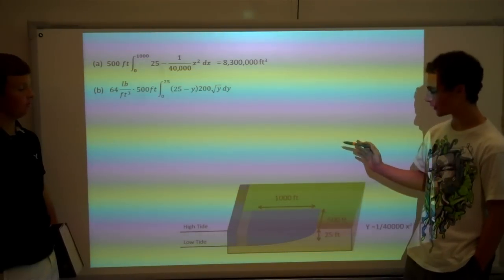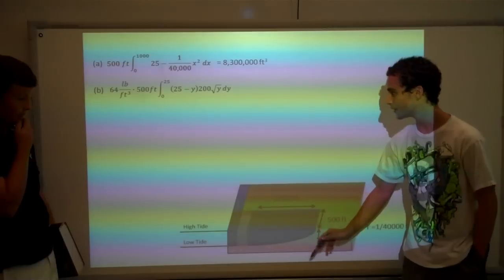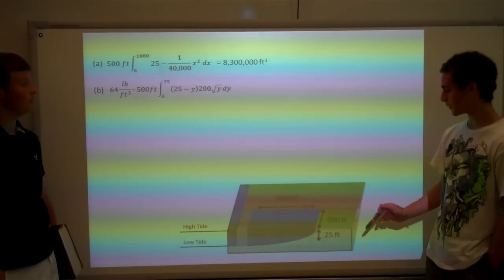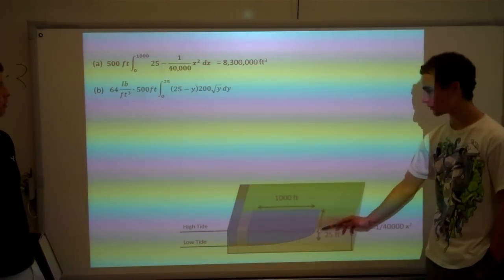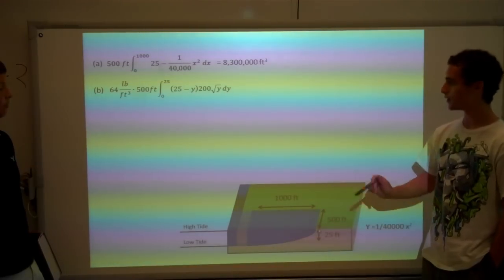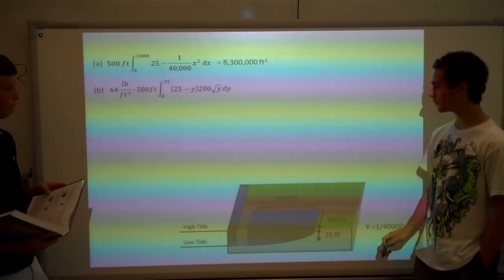And then, to find the total amount of distance they fall down, you do 25 minus whatever the y coordinate is of where they are. And to make it three-dimensional, you multiply it by 500, and you integrate it from 0 to 25, the range of the y. And you multiply it by 64 pounds per cubic foot to get the conversion of water's weight.